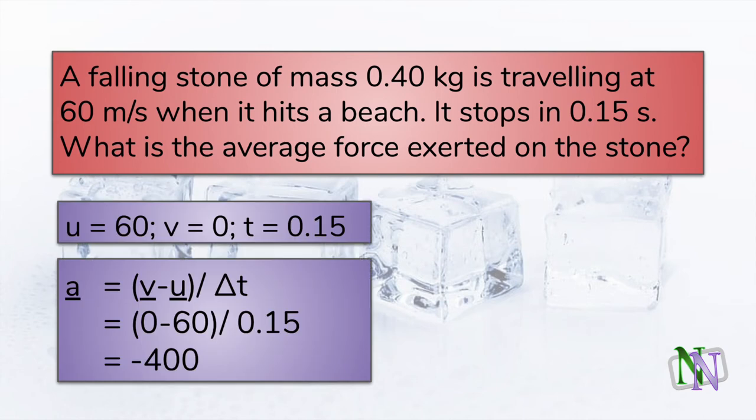Firstly, using the formula for acceleration, we see that the average acceleration is minus 400 meters per second squared. And the negative sign means that the acceleration is in the opposite direction to the motion. In other words, it shows the stone slowing down to rest.